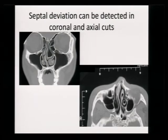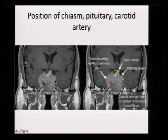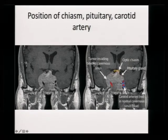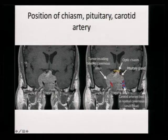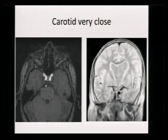Anatomy is very important. Septal deviation can be found on axial or coronal CT scan. In pituitary tumour surgery, know the position of the carotid artery, the normal pituitary, and the chiasm — identify the optic chiasm. Usually the normal pituitary is draped around the tumour, either superior, left, right, or posterior. Diagnosing this beforehand is good. The distance between the two carotids is important; two carotids very close together can be called kissing carotids.